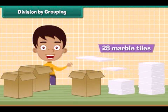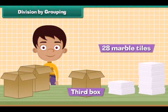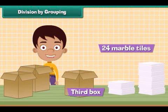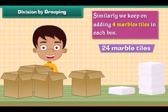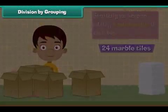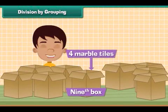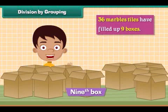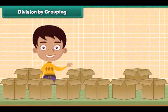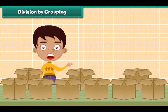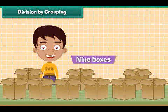4 more marble tiles in the third box. Now 24 marble tiles are left. Similarly we keep on adding 4 marble tiles in each box. So at last we have 9th box in which last 4 marble tiles are kept. 36 marble tiles have filled up 9 boxes. 36 marble tiles are put into equal groups of 4. Need 9 boxes.